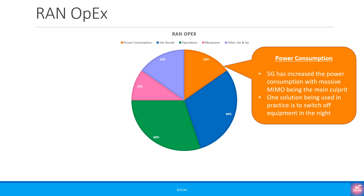The final thing we want to discuss is power consumption. It is a big chunk of OpEx. 5G has significantly increased the power consumption, with Massive MIMO being the biggest culprit. Some operators have resorted to switching off certain equipment in the off-peak hours to save on power consumption. New innovations are urgently needed here to help networks.